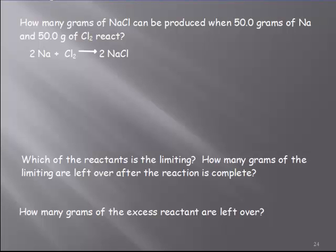Now for calculating the grams of an excess reactant that are left over — the definition of a limiting reactant is the reactant that is completely used up. If you start with 50 grams of Na and 50 grams of Cl2, one of them is going to be completely gone. All 50 grams are going to be used up and the reaction will stop. The way we determine which one it is: